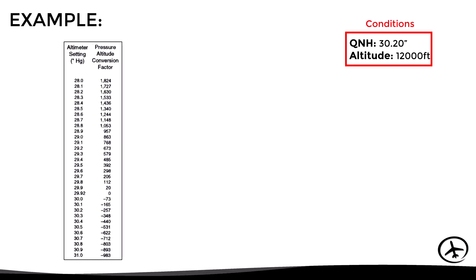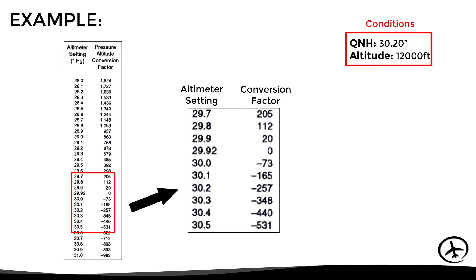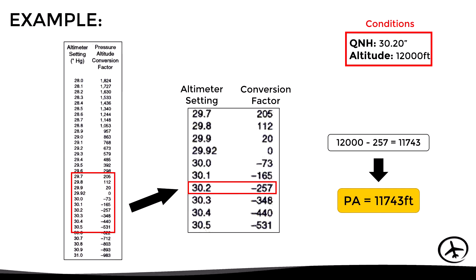Let's begin with the table. Suppose we have a QNH of 30.20 and an indicated altitude of 12,000 feet. Looking at the table, we find the correction value for 30.20 is minus 257. Therefore we take 12,000 feet and subtract 257 feet, obtaining a pressure altitude of 11,743 feet.